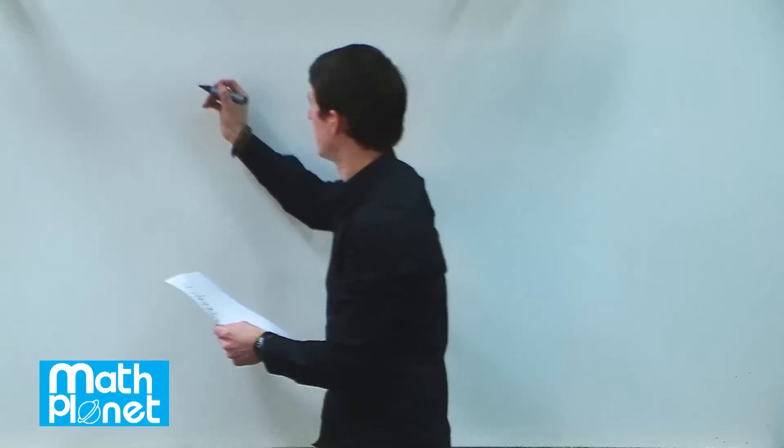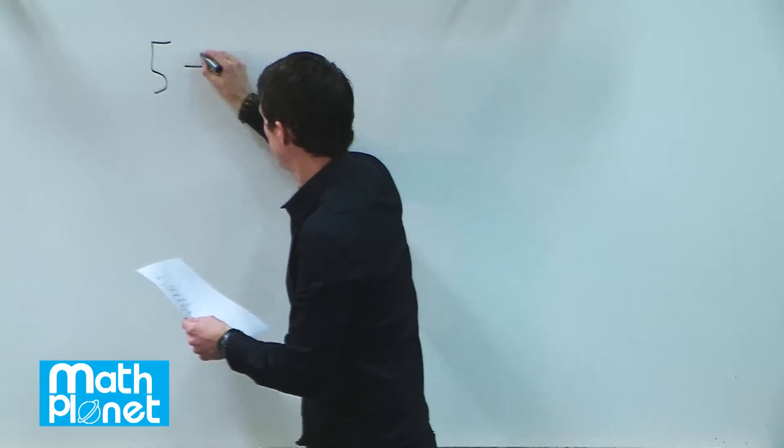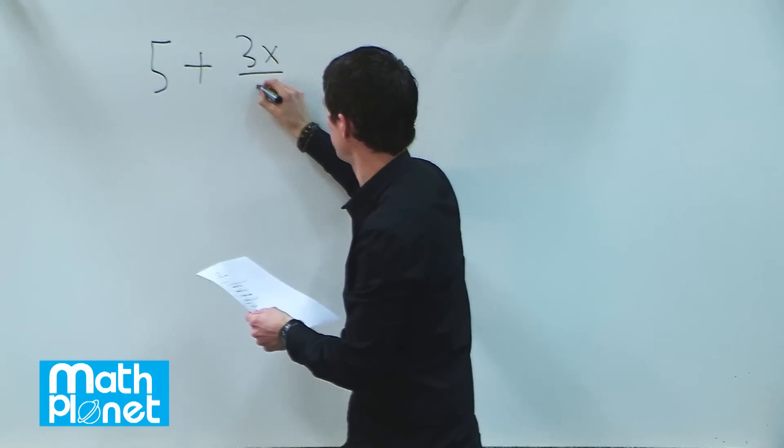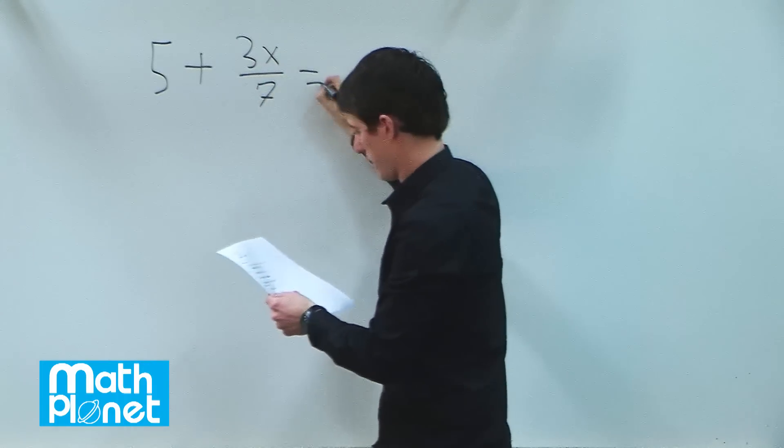Let's solve this algebraic equation. 5 plus 3x over 7 equals 8.